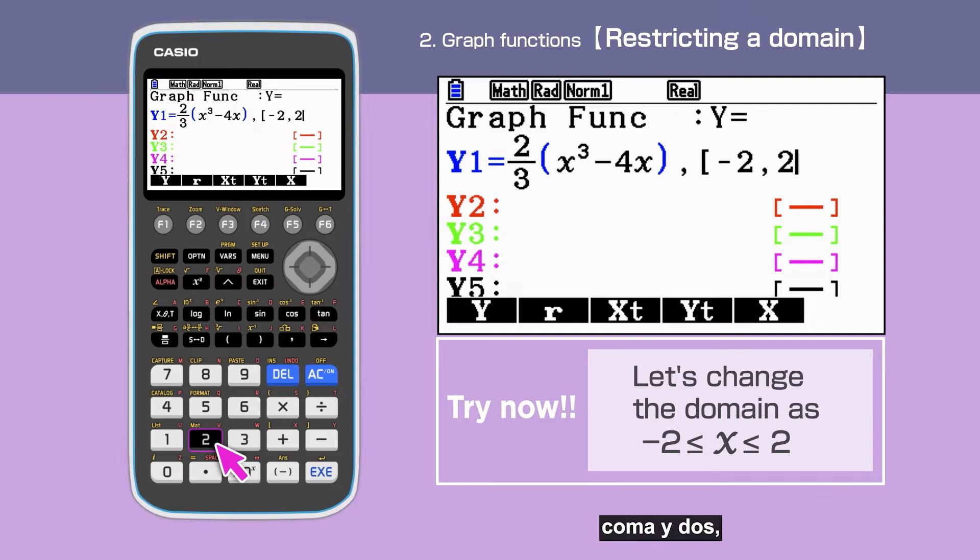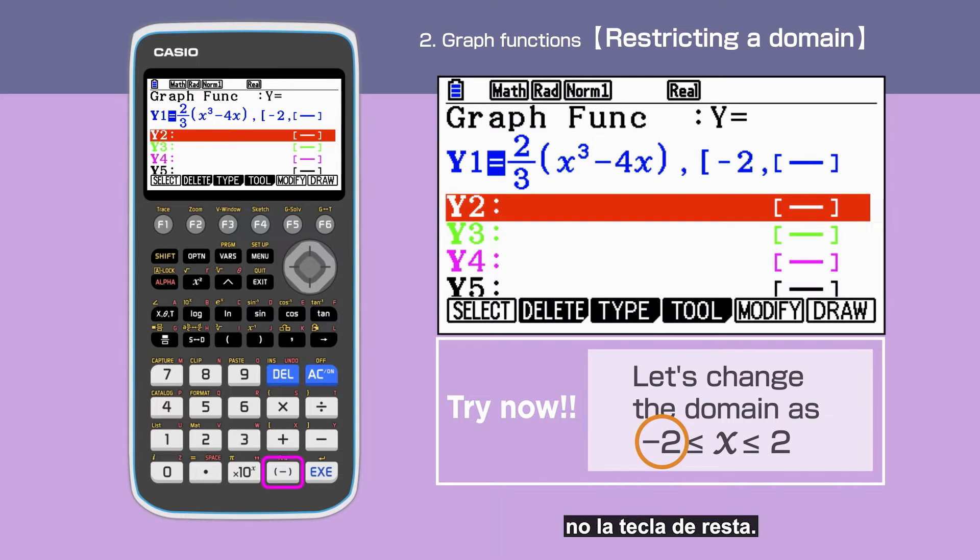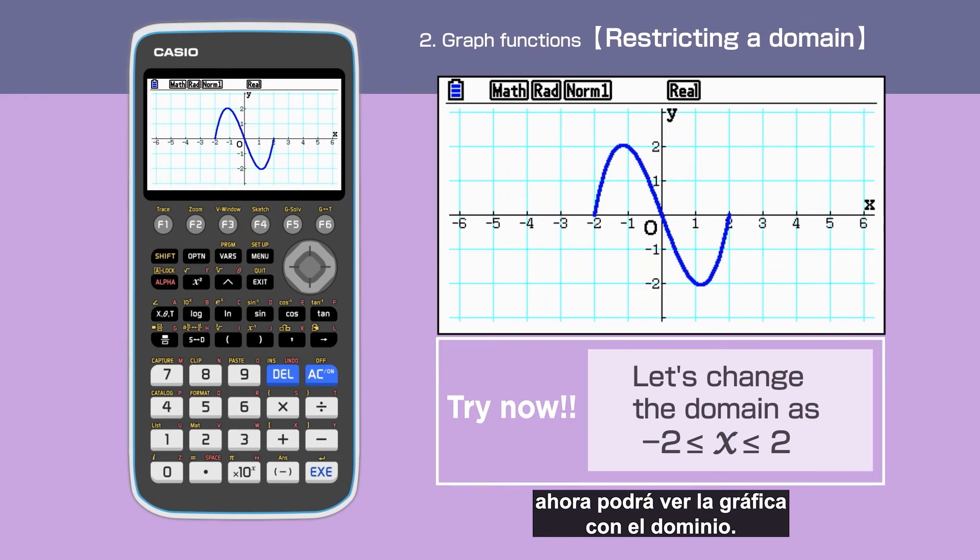Minus 2, comma, 2, close the bracket. We need to use the bracket minus negative key for the negative 2, not the subtract key. Press F6. Now we have drawn a graph with the domain.